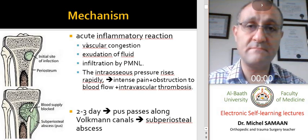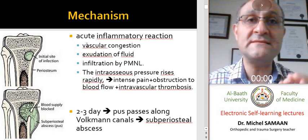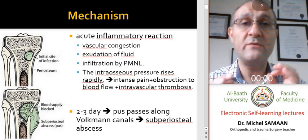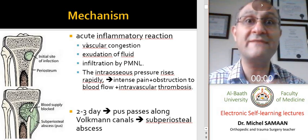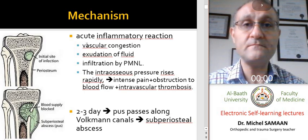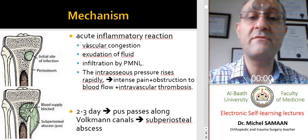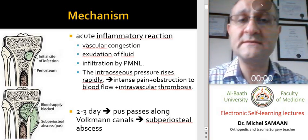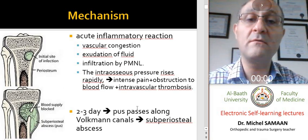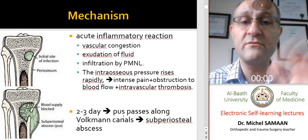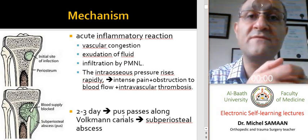As we have said previously, the intra-osseous pressure rises rapidly. That causes intense pain. So when we have acute osteomyelitis, we have intense and severe pain in the limb, and obstruction of blood flow that causes intravascular thrombosis and bone death in the late stages. After two or three days, we may have pus formation that travels through Volkmann canals and causes a subperiosteal abscess formation.